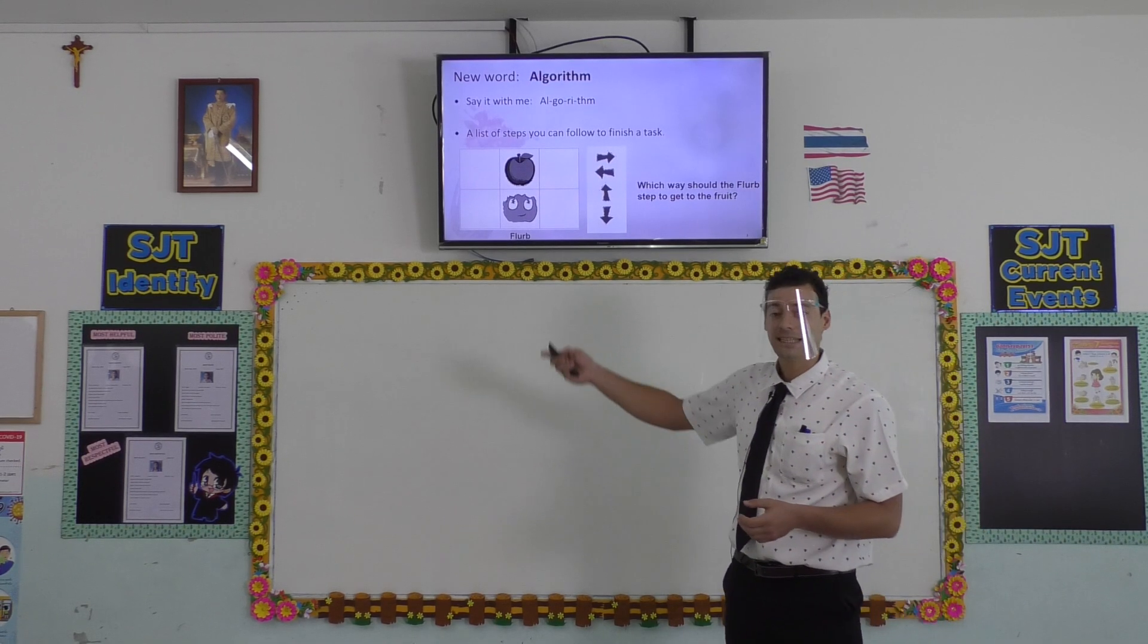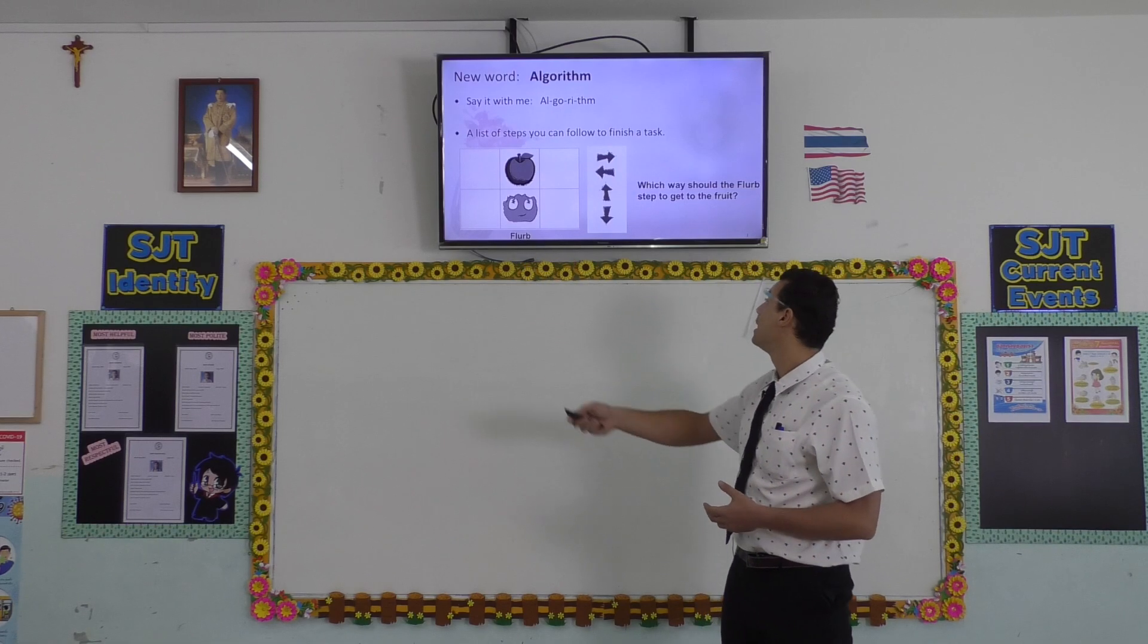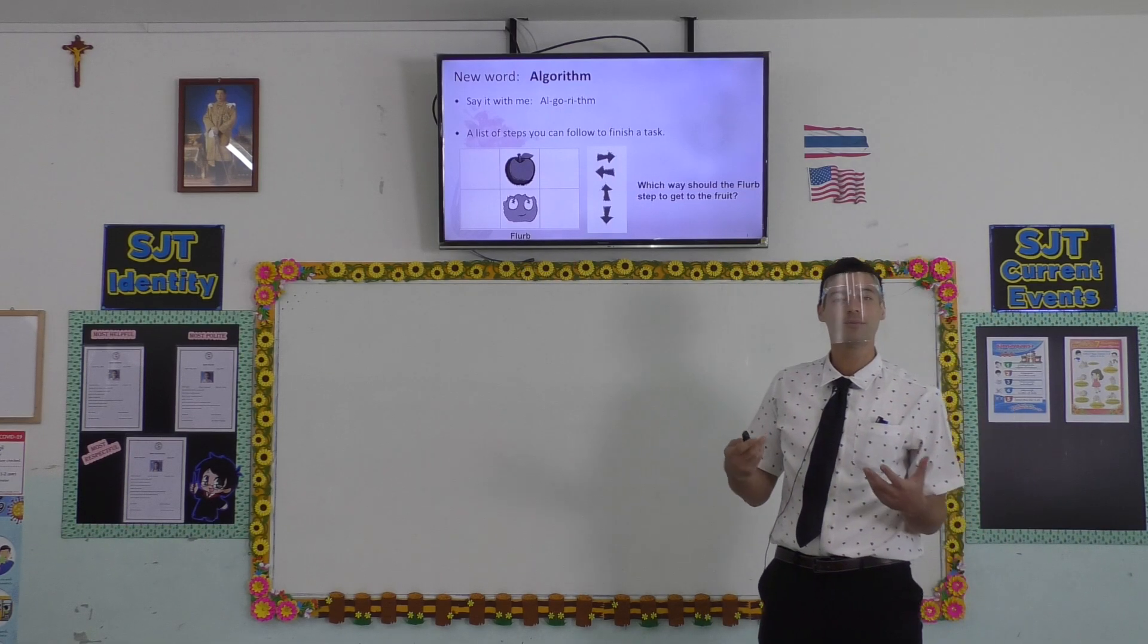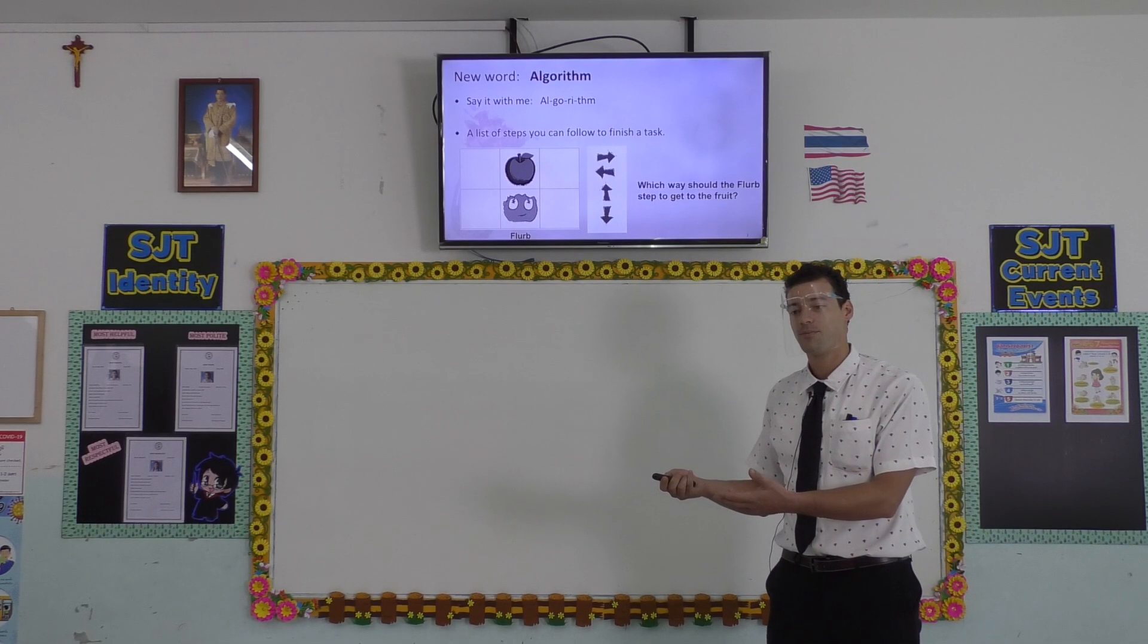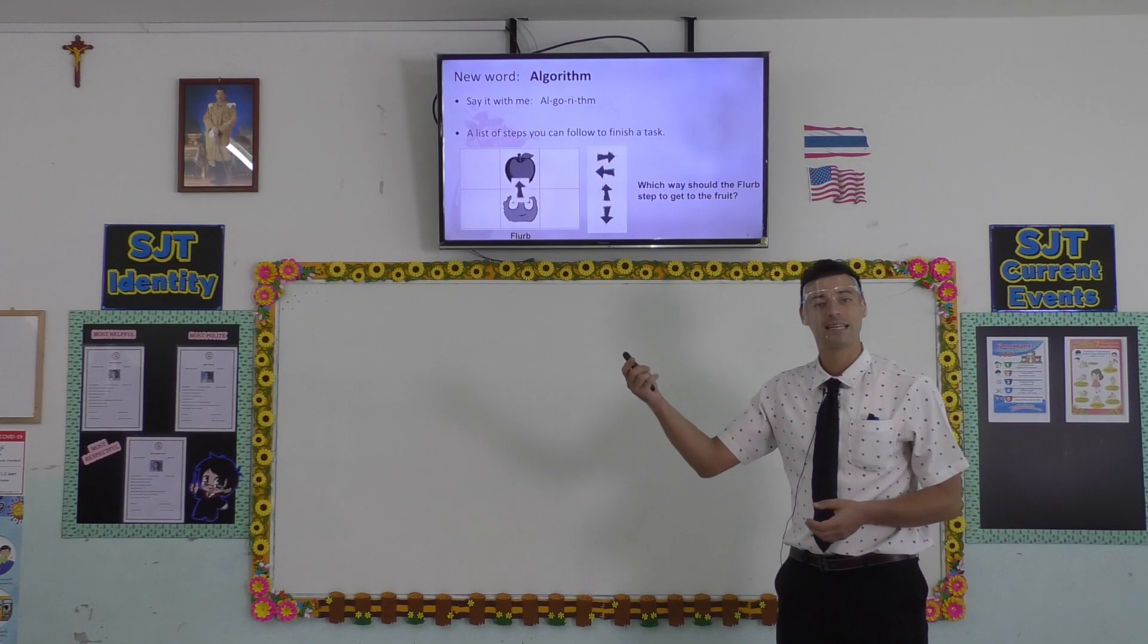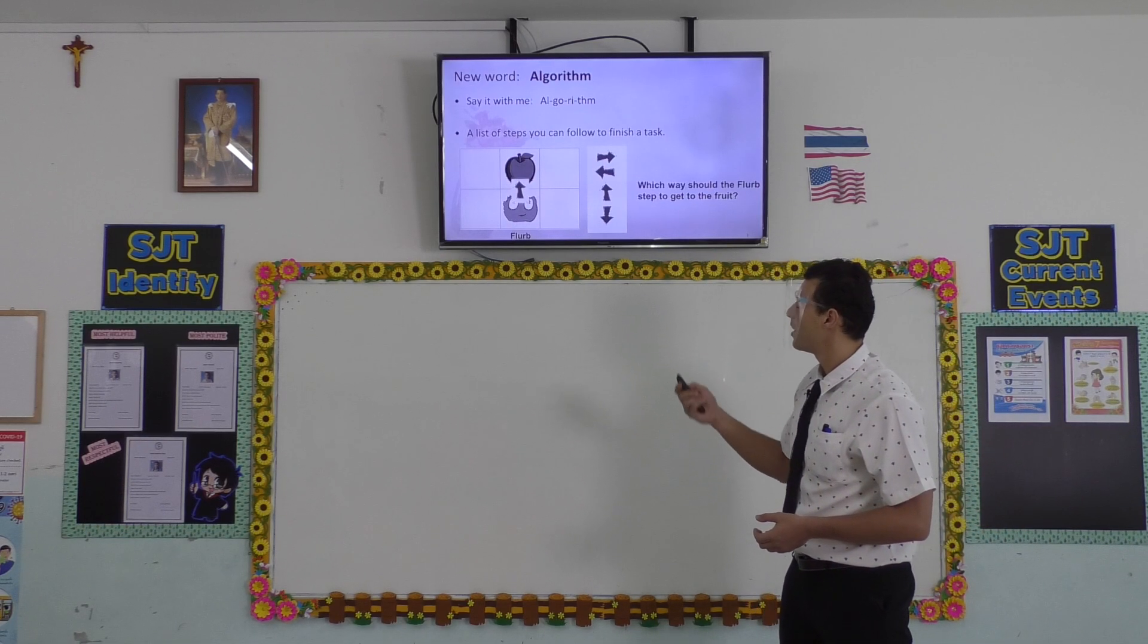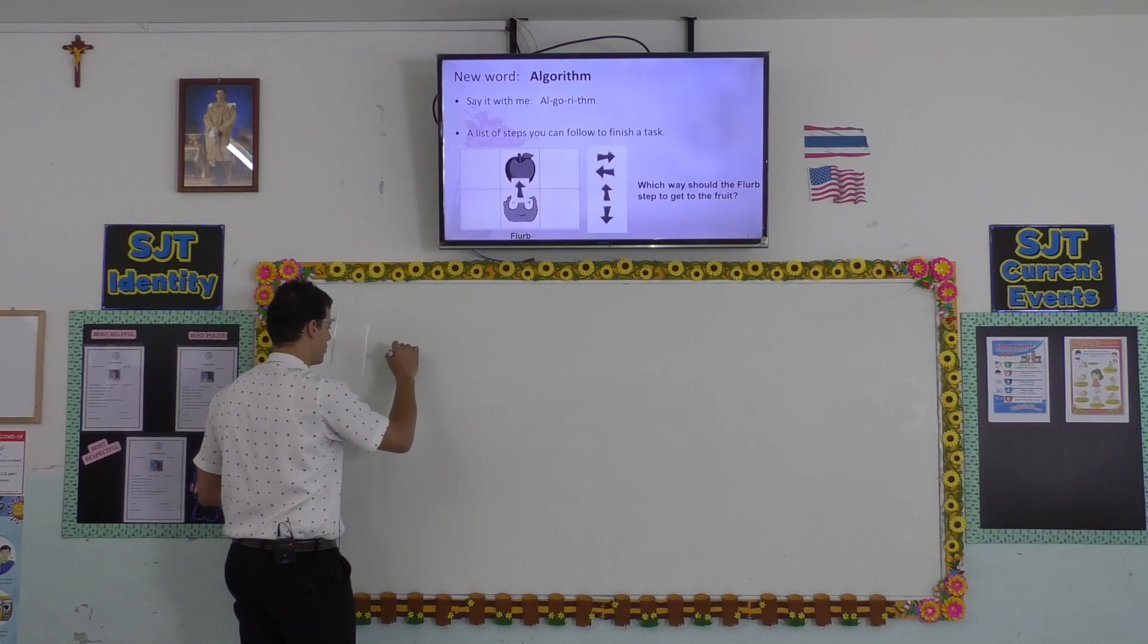So let's look at this picture. We have Flerb and we have an apple. Which way should Flerb step to get to the fruit. He should step forward. Alright, so let's have these arrows on the board.